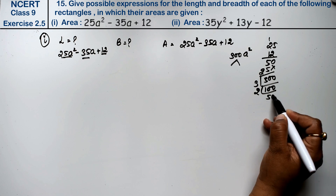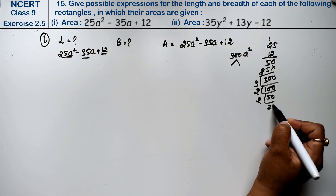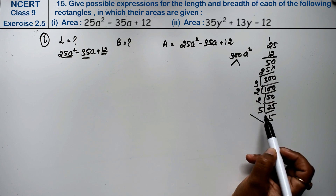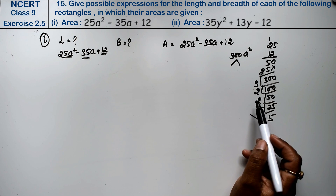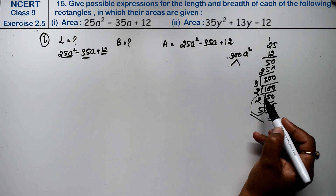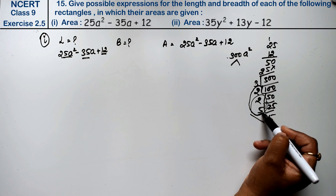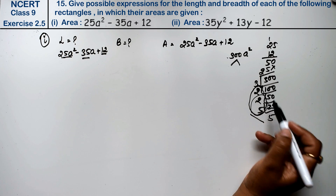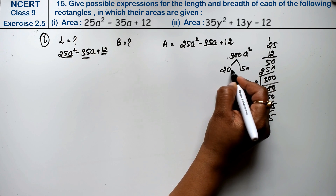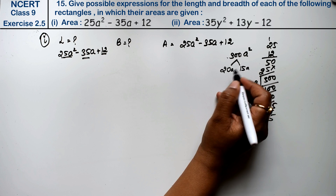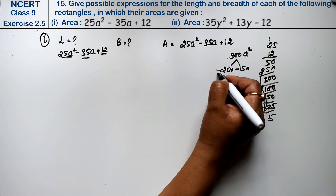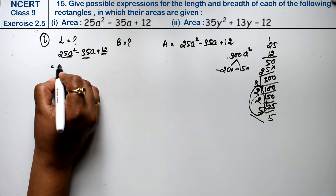Let's try different factor pairs of 300. We check 25 and 12: 25 plus 12 gives 37, which is more than 35, so this won't work. Let's try another factor pair. We try 20 and 15: 4 times 5 are 20, and 3 times 5 are 15. If we keep minus 20 and minus 15, they add to minus 35. Since both signs are the same, we keep minus 20a and minus 15a.